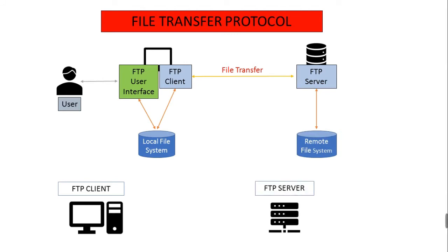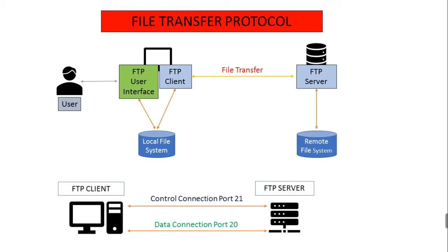The control connection is furthermore used for the transfer of commands which describe the functions to be performed and the replies to these commands. The control connection follows the Telnet protocol. The data connection is used to send a file.